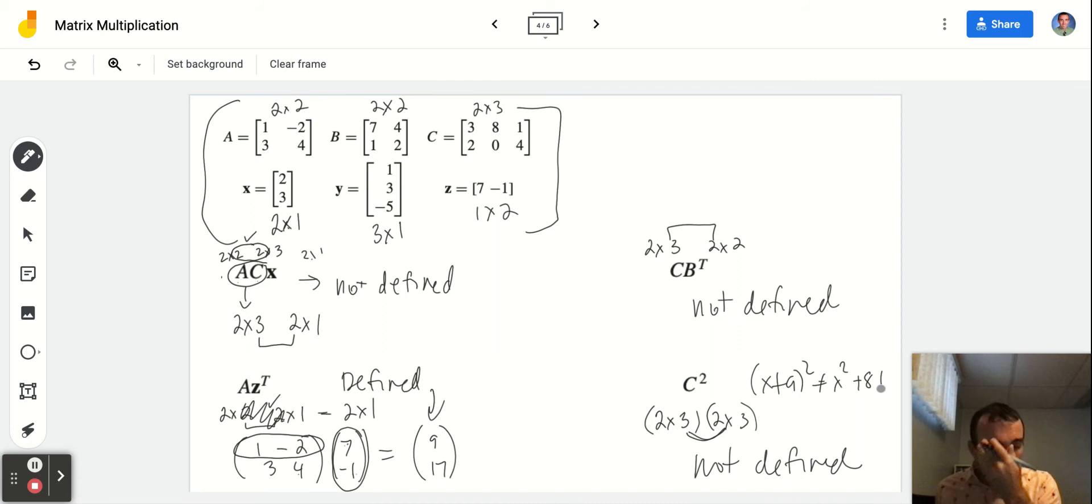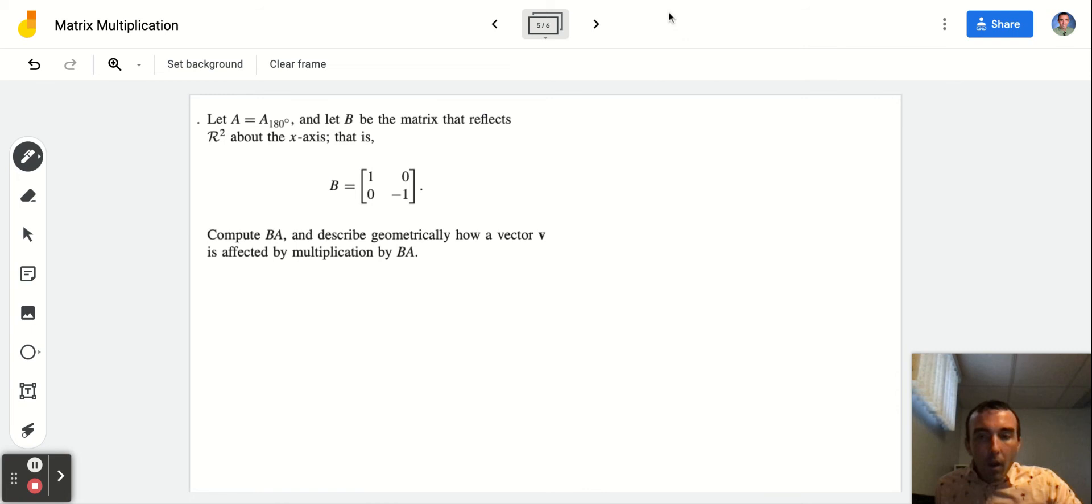Most products are defined. I just happened to pick out a bunch of ones that were not just to show you that these all can have different faces. There's not a type that doesn't work. Not defined can show up with transposes, with squares, with three matrices multiplied together. Really just about anywhere.